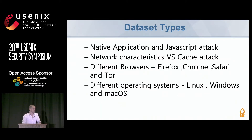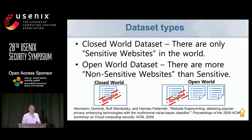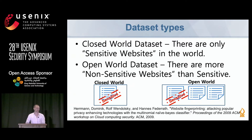Our dataset types included: native application versus JavaScript attacks, network versus cache attacks, different browsers (Firefox, Chrome, Safari, Tor), and different operating systems (Linux, Windows, macOS). We also used different dataset types: a closed-world dataset with a fixed set of sensitive websites the attacker wants to identify, and an open-world dataset that reflects the real world — where the attacker wants to determine whether a visited site is one of the sensitive websites or one of many non-sensitive ones.